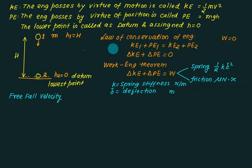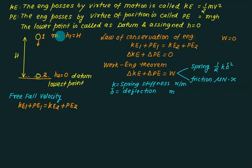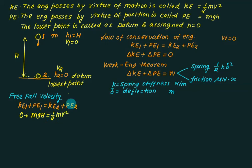Applying the law of conservation of energy: KE initial plus PE initial equals KE final plus PE final. The initial kinetic energy is zero since v1 equals zero. The initial potential energy is mgH. The final potential energy is zero. So mgH equals one-half mv squared. Cancelling m, we get v2 equals the square root of 2gH. This is called the free-fall velocity.